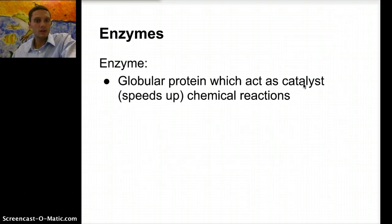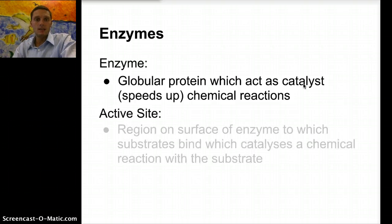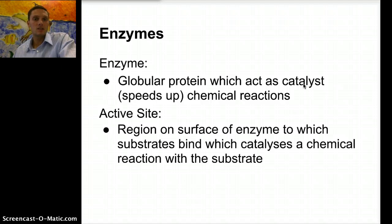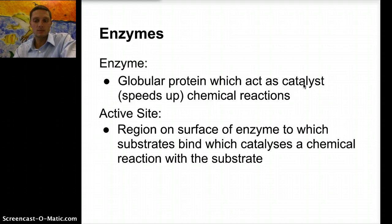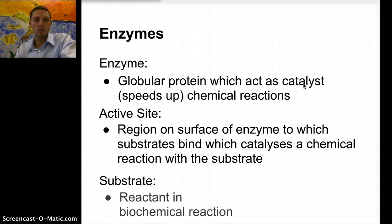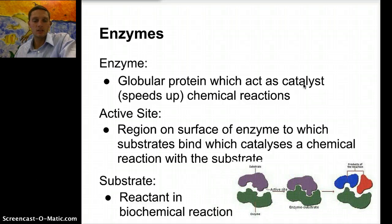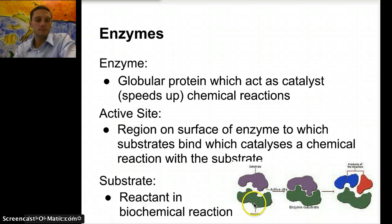An enzyme is a globular protein which acts as a catalyst that helps to speed up chemical reactions. Enzymes have something called an active site — this is the region on the surface of an enzyme to which substrates bind and which catalyzes a chemical reaction with that substrate. The substrate is what is eventually going to become our products; it's the reactant in a biochemical reaction. Here's a nice image to clarify this — our green here is the enzyme, a globular protein made of amino acids.